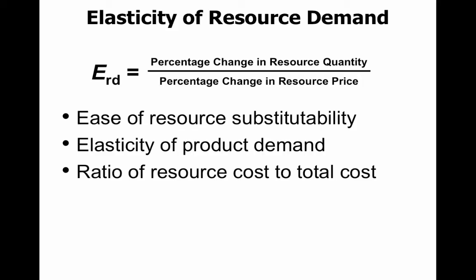Regarding elasticity of resource demand, the same situation applies as before — quantity over price. The determinants include: ease of resource substitutability, the elasticity of product demand (since all resources are derived demand, the elasticity of the product impacts elasticity of demand for the resource), and the ratio of resource cost to total cost. If the resource is a major portion of total cost, demand will be more elastic.